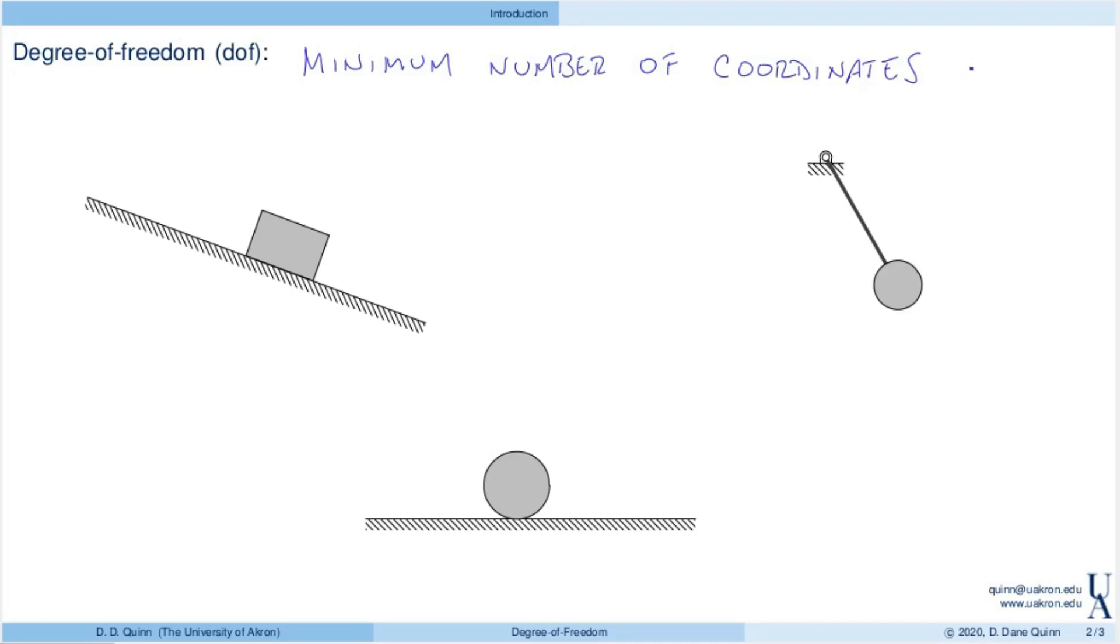So what do we mean by configuration? Well essentially it's where the system is at. Down here I have given three different examples to illustrate the configuration of different systems.